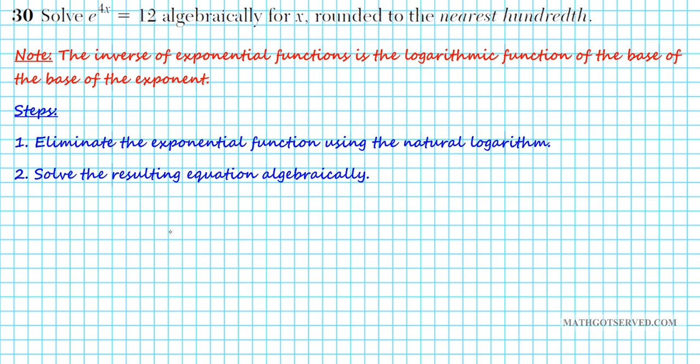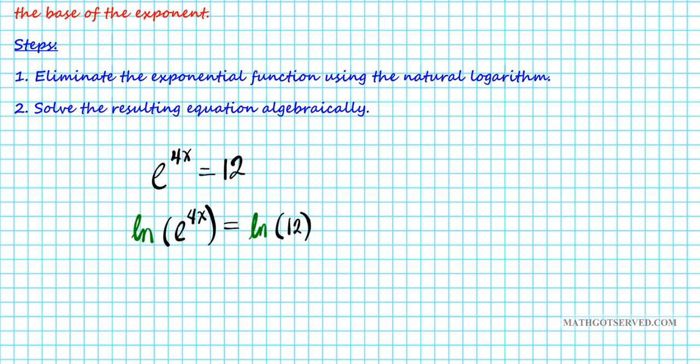All right. So, let's go ahead and do that. We have E to the 4X equals 12. So, log base E is LN. So, what we're going to do is we're going to take the natural logarithm. We're not multiplying. Take the natural logarithm on both sides of the equation, like that, equals the natural logarithm of 12. And then, we're going to use a property of logarithm. These are inverse functions. So, they both cancel each other out. And then, you're going to have 4X equals the natural logarithm of 12.